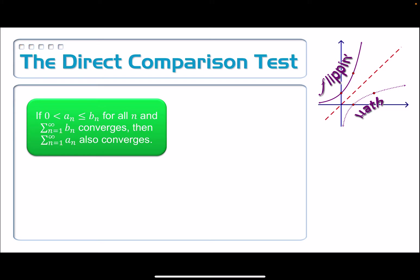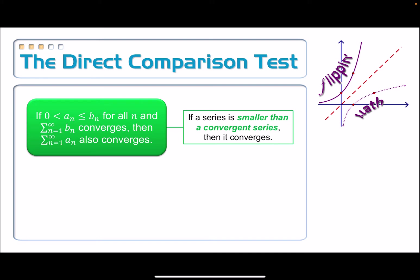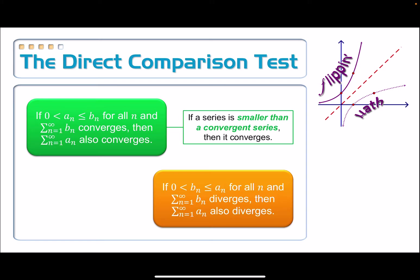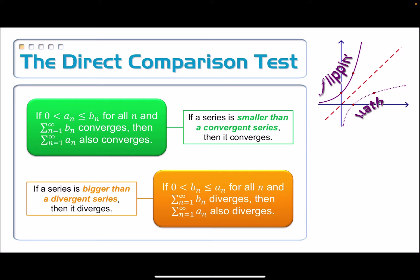The direct comparison test has two parts, one for convergence and one for divergence. For convergence: if 0 < a_n ≤ b_n for all n, and the series of b_n converges, then a_n also converges — in layman's terms, if your series is smaller than a known convergent series, it must also converge. For divergence: if 0 < b_n ≤ a_n for all n, and the series of b_n diverges, then the series of a_n must also diverge — if your series is bigger than a known divergent series, it must also diverge.